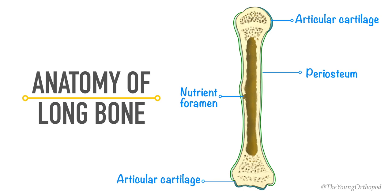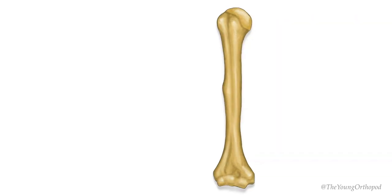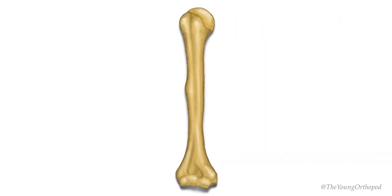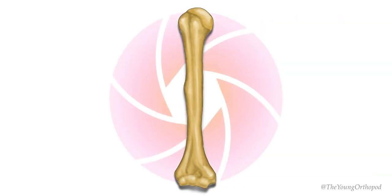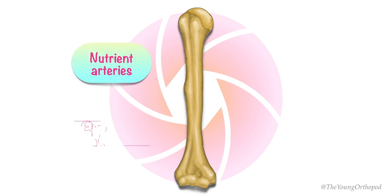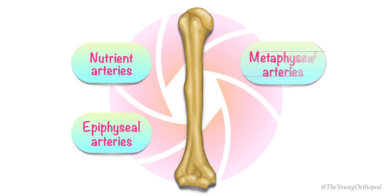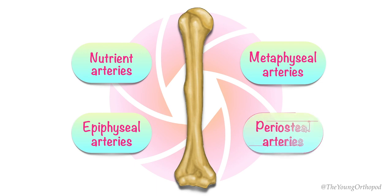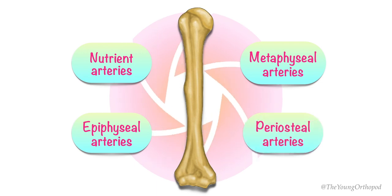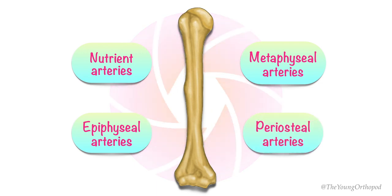Blood supply of the long bone accounts for five to ten percent of the cardiac output. A typical long bone receives blood supply from various sources. These include nutrient arteries, epiphyseal arteries, metaphyseal arteries, and periosteal arteries. Let's look at them one by one.